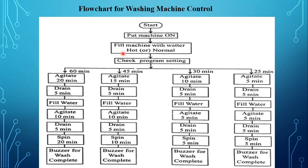This is the flowchart for washing machine control. First, switch on the washing machine, then fill with hot or normal water, then check program setting — 60 minutes, 45 minutes, 30 minutes, or 25 minutes. For each operation it takes 7 states: agitate, drain, fill water again, agitate again, drain again, then spinning operation, then buzzer for wash complete.